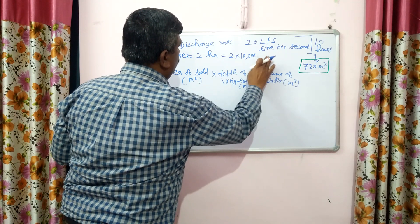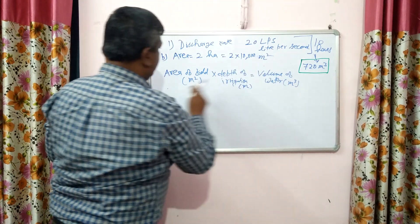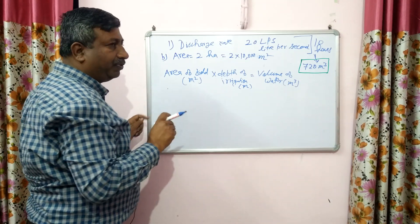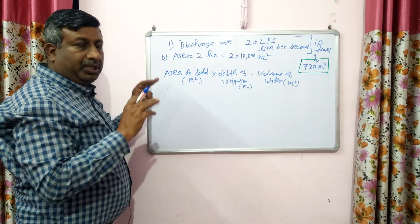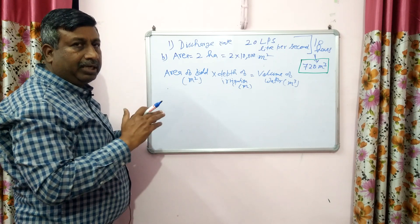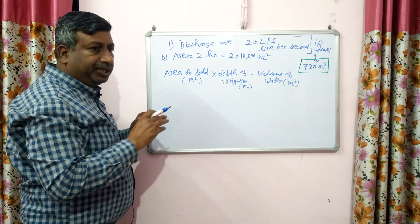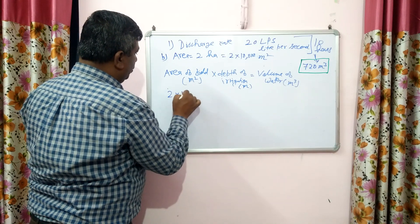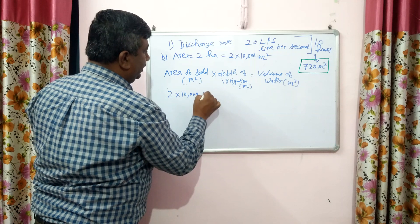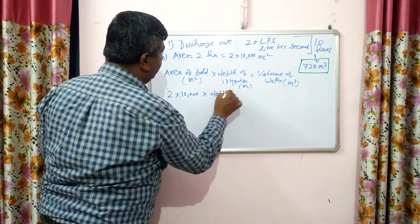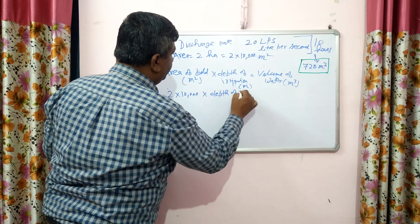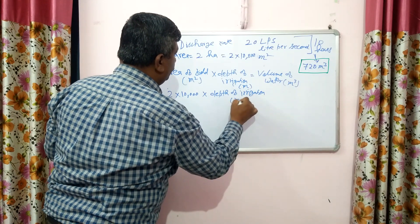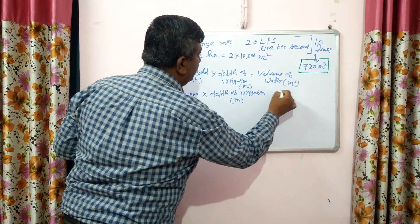The area in square metres is used in the basic formula: area of field × depth of irrigation = volume of water. In this question, the area is fixed and we have to calculate the depth of irrigation. The area of field is 2 × 10,000 square metres, and the volume of water is 720 cubic metres.